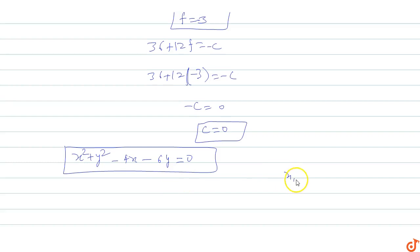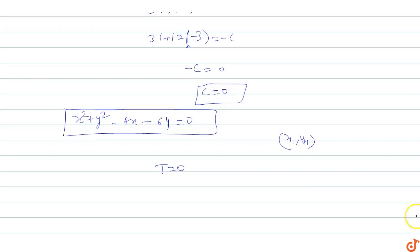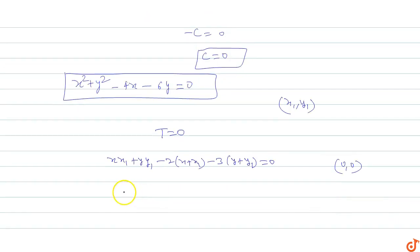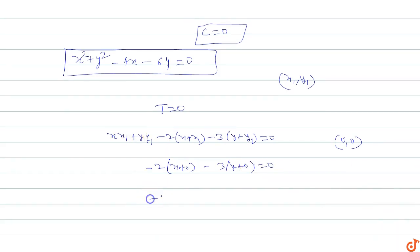The equation of tangent from point (x₁, y₁) using T = 0 is: xx₁ + yy₁ - 2(x + x₁) - 3(y + y₁) = 0. For the origin, x₁ = 0 and y₁ = 0. Substituting: -2(x + 0) - 3(y + 0) = 0, which gives -2x - 3y = 0.